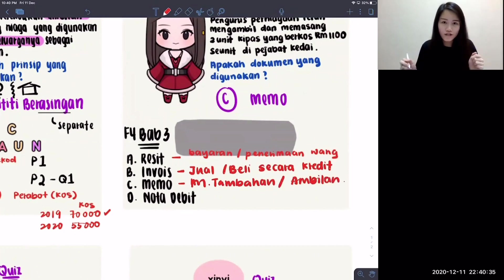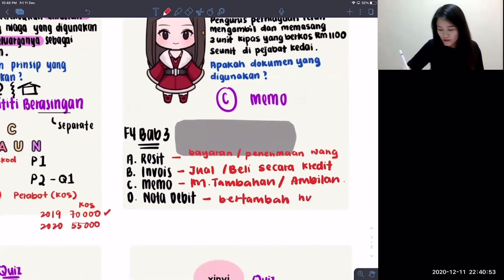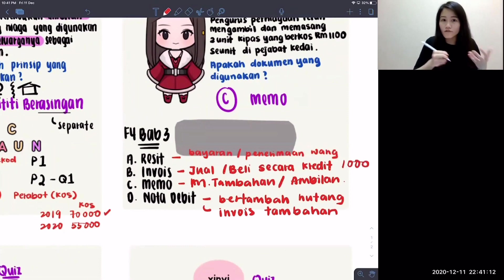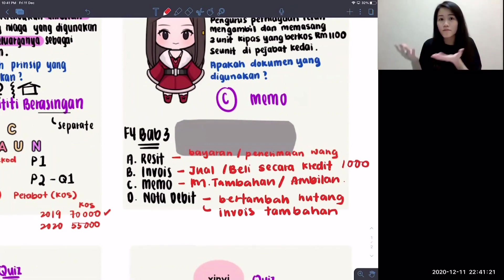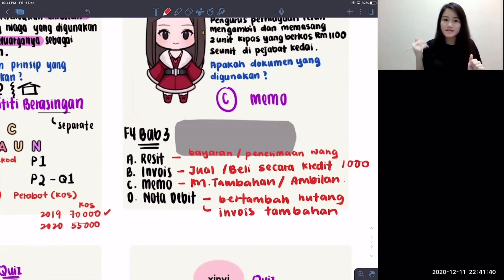For nota debit, this also has a specific use. Nota debit is sometimes called invoice tambahan — it means when an invoice was issued but the price was recorded wrongly. For example, it was supposed to be RM1,000 but was written as RM900, leaving a missing RM100. To top it up, you issue a nota debit stating the miscalculation and adding on the RM100. So nota debit is to add on hutang. Therefore, a, b, and d are not applicable — the answer is memo.